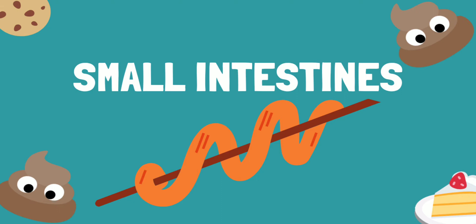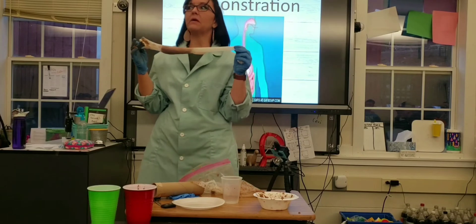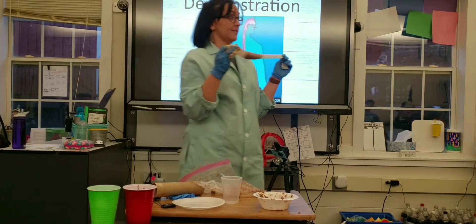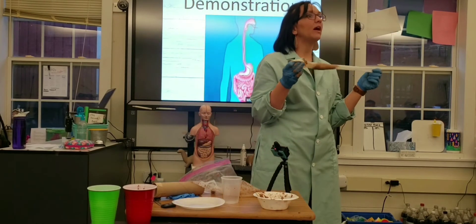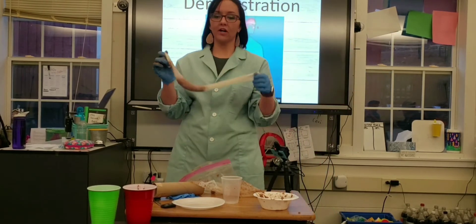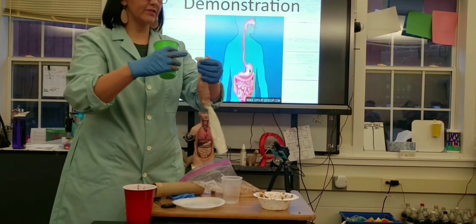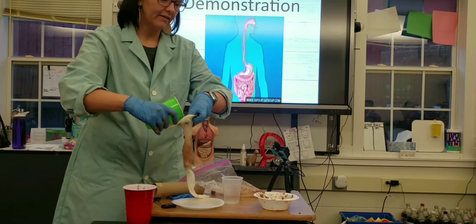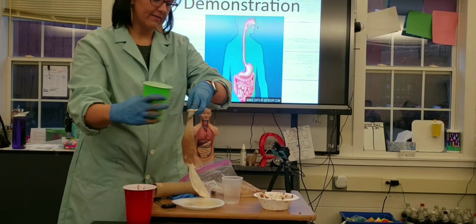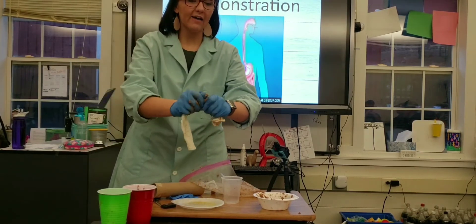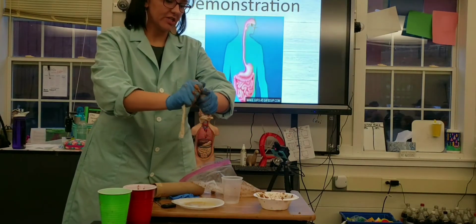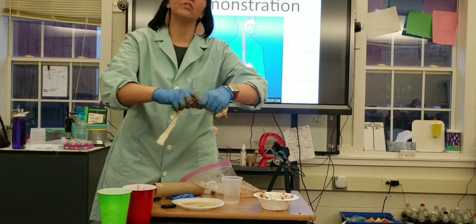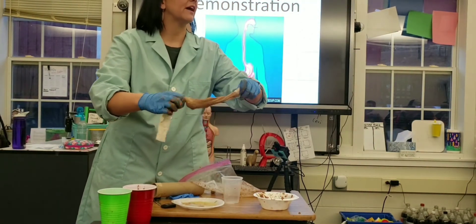The function of the small intestines will be represented by the knee-high stocking and mountain dew. Remove the food from the stomach and put it into the knee-high, which represents the small intestines — it's stretchy and you can make it long like the small intestines. Pour the bile, or mountain dew, onto the food in the small intestines, then start squeezing to have some of the juices leak out, demonstrating how nutrients are absorbed out at the small intestines.